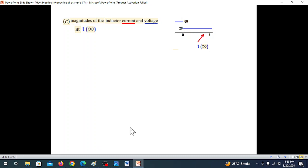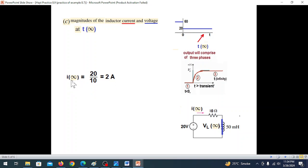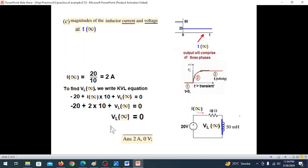Part (c): current and voltage at t=infinity. At infinity, we reach steady state again. The inductor behaves like a short circuit, so current is voltage divided by resistance: 20/10 = 2 amperes. Using KVL, VL(infinity) = 0 volts.